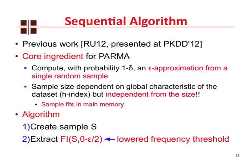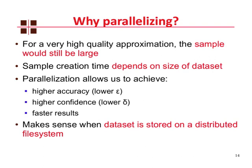Given that we have this very efficient sequential algorithm, one may ask why we even want to parallelize it. The motivation is that even if you want a very high quality approximation, the sample will still be large and may not fit into the main memory of the machine, and also that the sample creation time depends on the size of the dataset because we have to scan the entire dataset. So what parallelization allows us to achieve is higher confidence, higher accuracy, and faster results. Parallelization also makes a lot of sense when the dataset is stored on a distributed file system, as is usually the case for very large datasets.